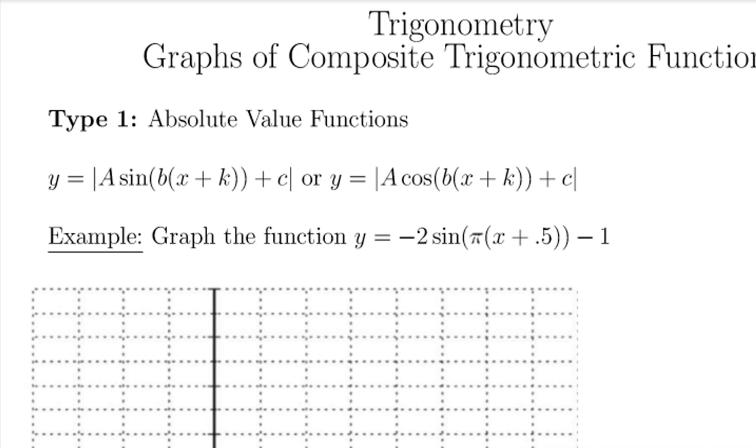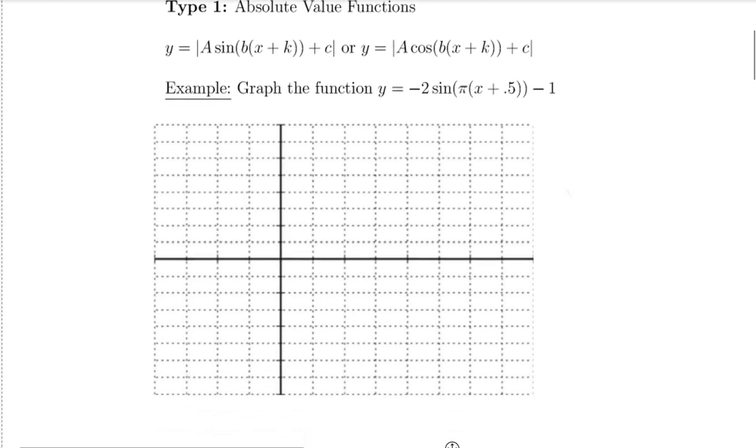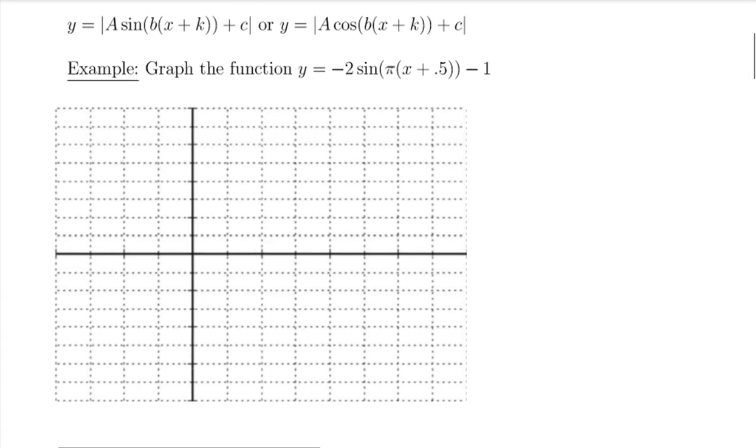So the first thing we're going to look at is taking the absolute value of a function. So this is any transformation of a sine or cosine graph, and we want to know how would I go about graphing this, and what should I do when I'm graphing it. So the first thing is you need to know how to graph your transformations well to begin with.